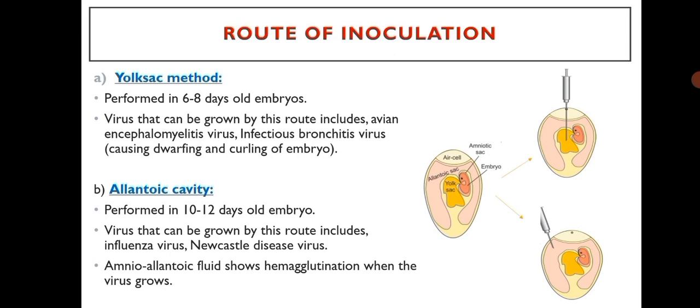The yolk sac method is preferred in six to eight days old embryos. Viruses that can be grown by this route include avian encephalomyelitis virus and infectious bronchitis virus, where it causes dwarfing and curling of embryo. The allantoic cavity method is performed in 10 to 12 days old embryo. Viruses that can be grown by this route include influenza virus and Newcastle disease virus. Allantoic fluid shows hemagglutination when the virus grows.